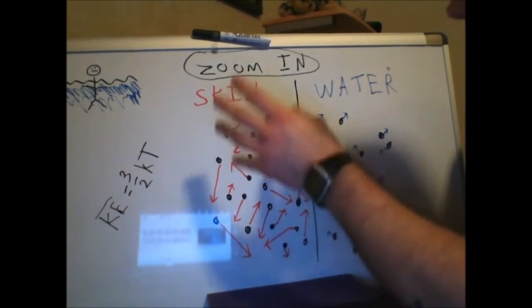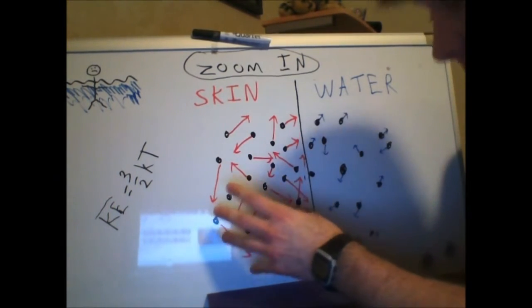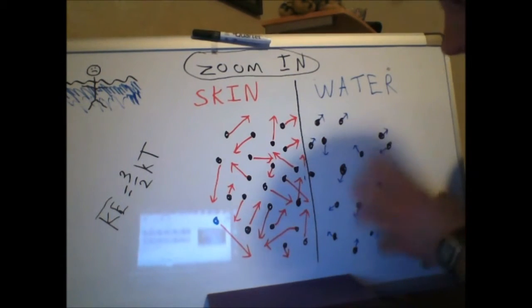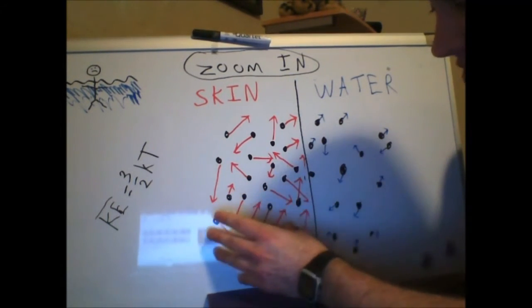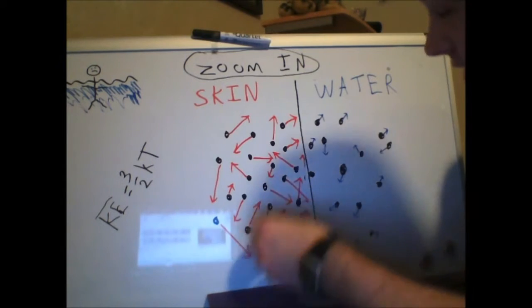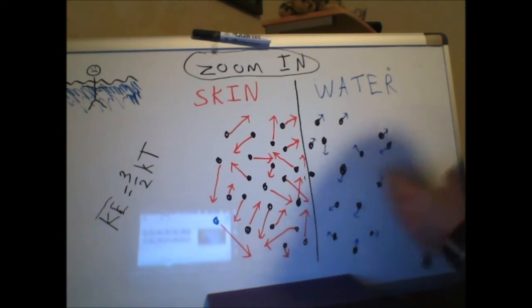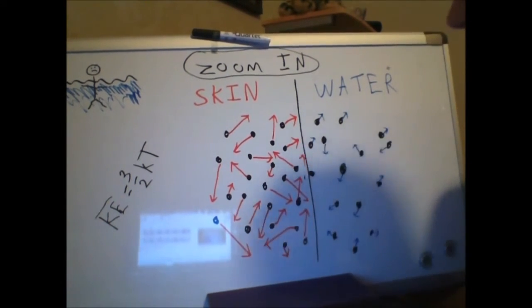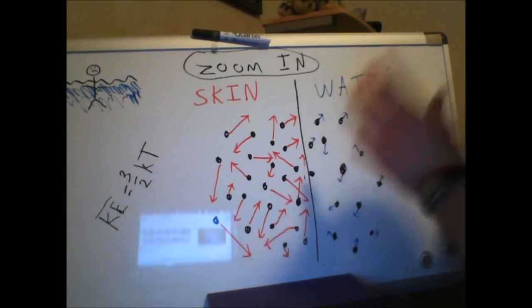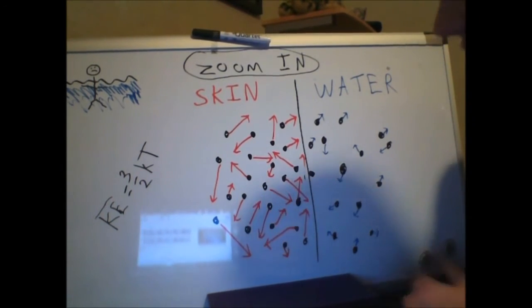Okay, with all these collisions, the skin transferred some of its thermal energy to the water. These move slower, skin cools off. These molecules begin moving a little faster, the water warms up a very small amount. So it's being in contact with water that allowed our skin to get rid of some of its thermal energy.